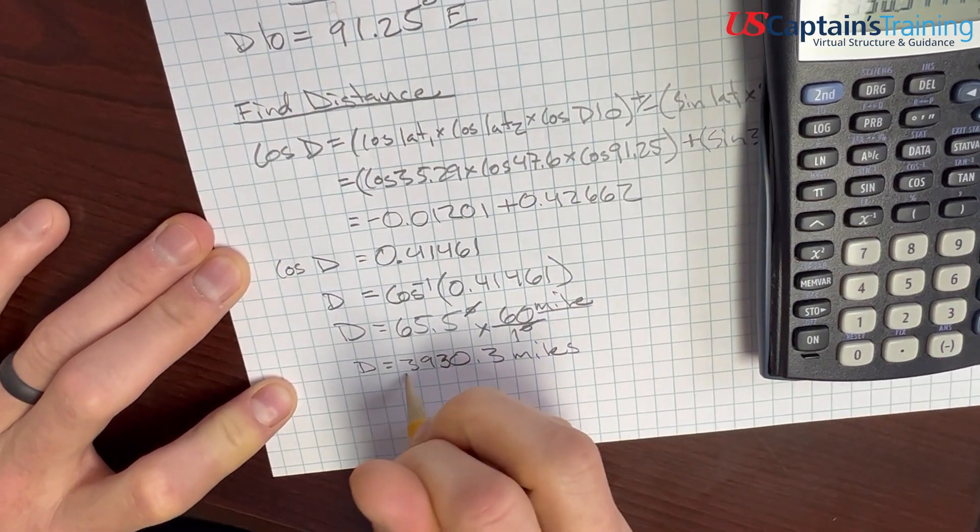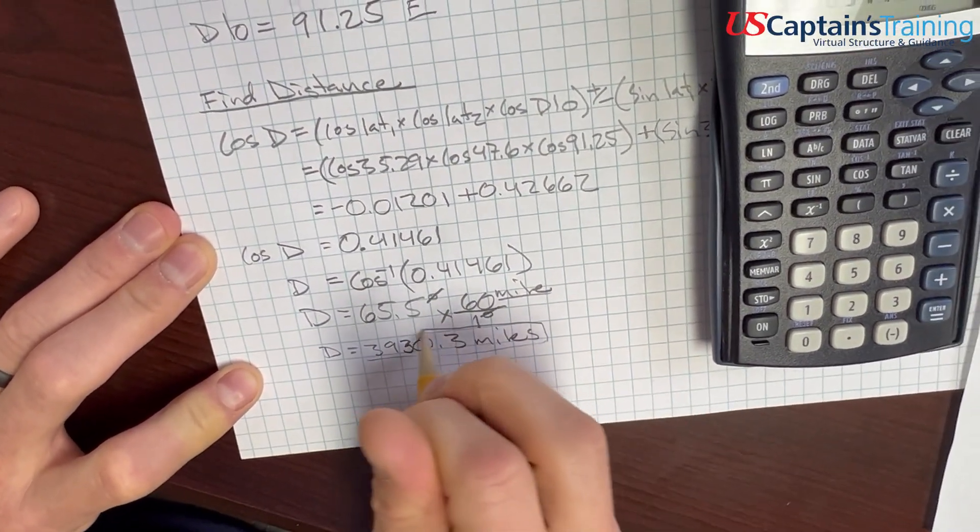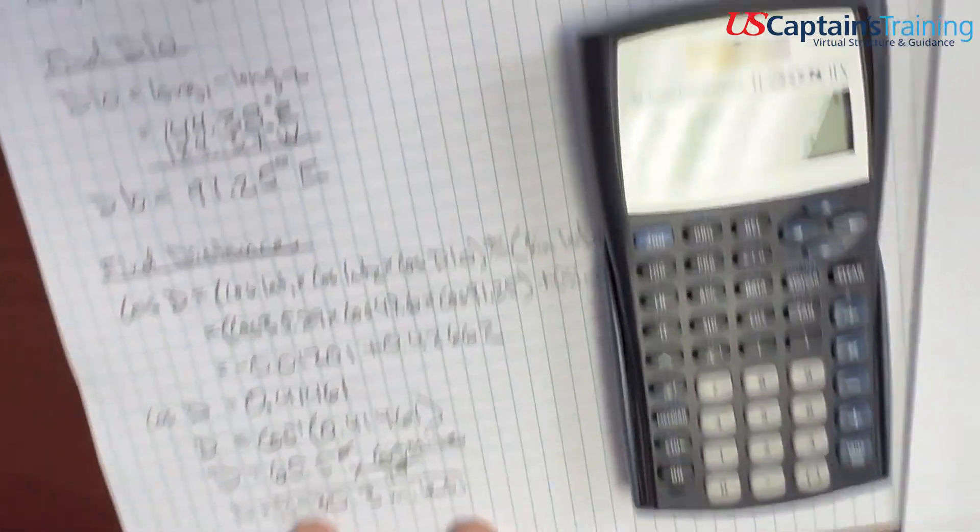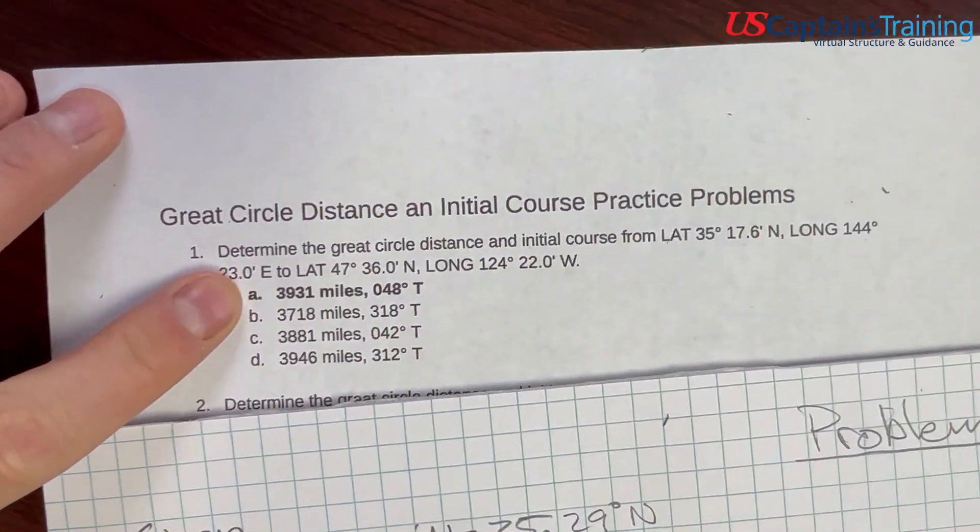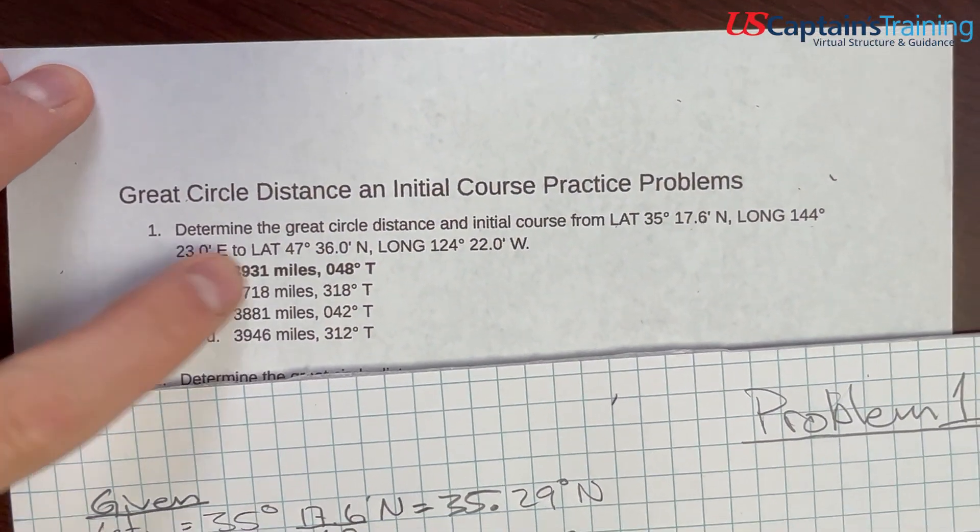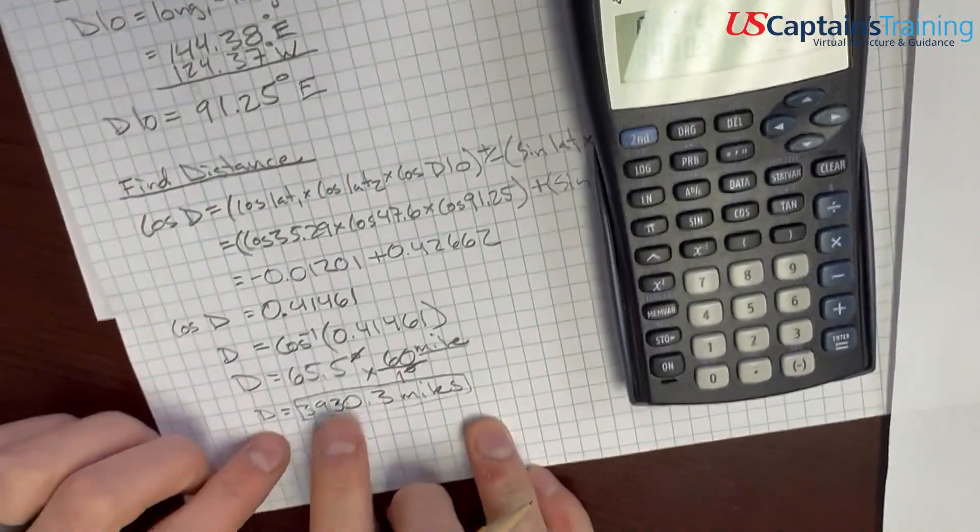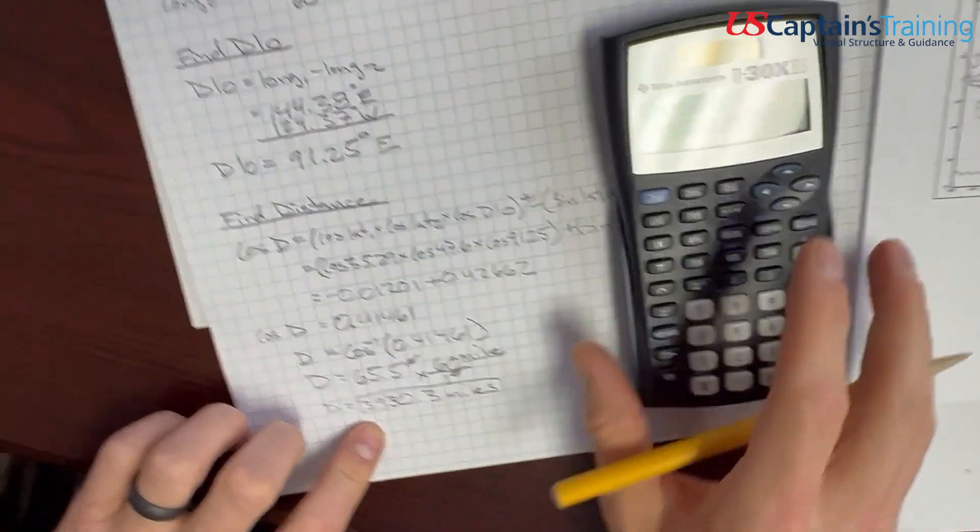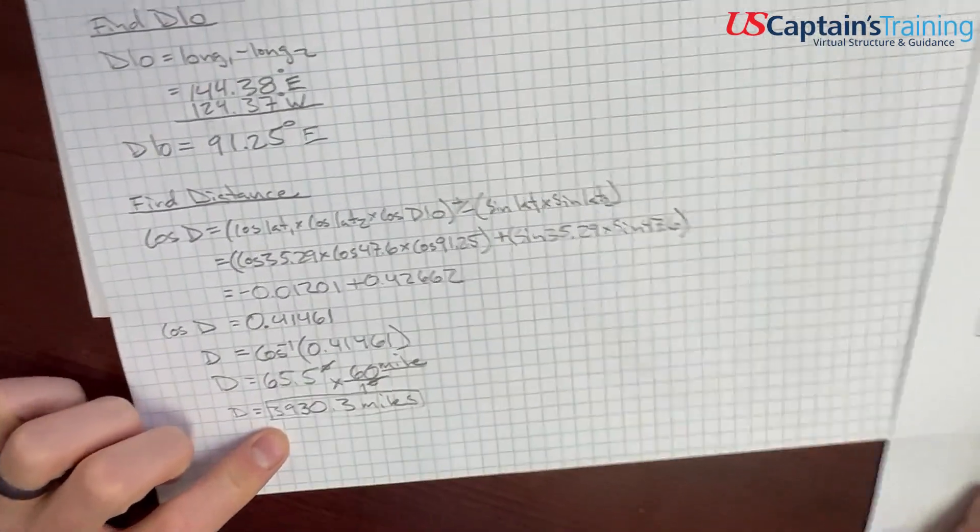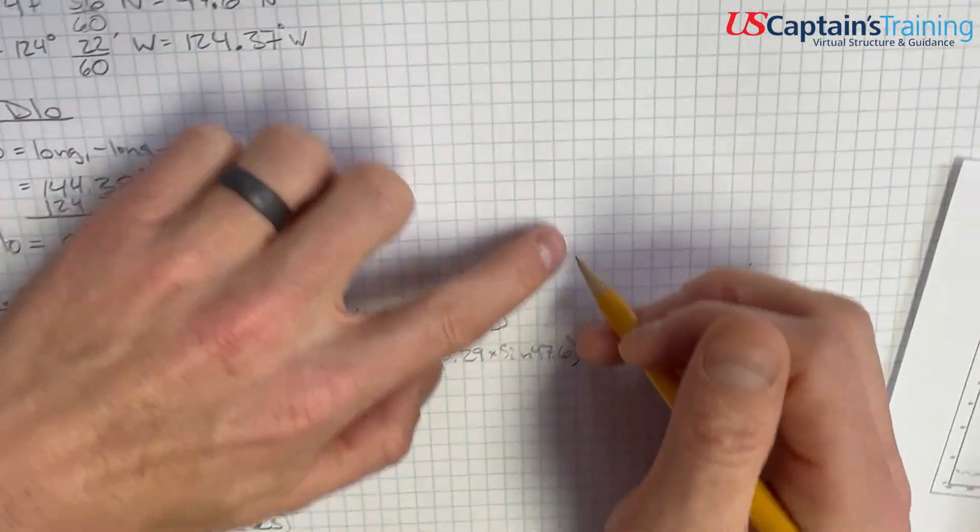Okay, excellent. This will be one of the answers. And, interestingly enough, if you look at this, we could pick the right answer right now. But, they want us to find initial course, too. And, this number is involved in finding the initial course. So, let's just go ahead and keep going on initial course.